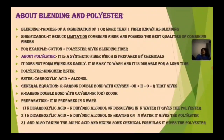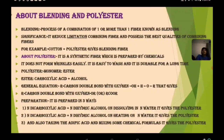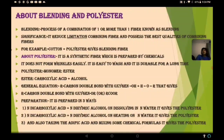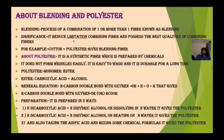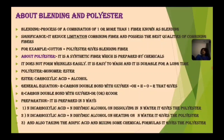About blending and polyester. Blending is the process of combining one or more fibers. The combination of one or more fibers — its significance is that it reduces the limitations of individual fibers and possesses the best qualities of the combining fibers. For example, cotton plus polyester gives a blended fiber, meaning it produces a new product.